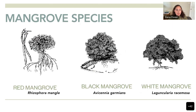I'm going to talk a little bit about the three most common species we have here in the U.S. Rhizophora mangle is the scientific name of the red mangrove. Avicennia germinans is the black mangrove, and Laguncularia racemosa is the white mangrove.